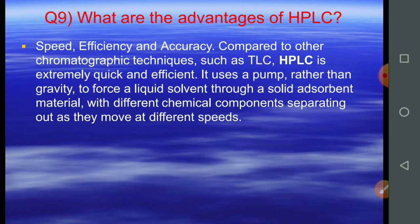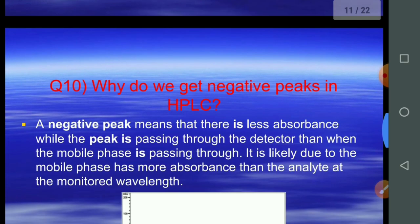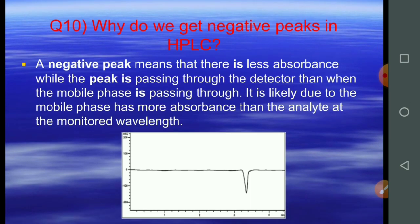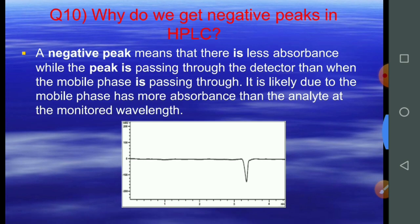Question number ten: why do we get a negative peak in HPLC? A negative peak means that there is less absorbance while the peak is passing through the detector than when the mobile phase is passing through it. This is likely due to the mobile phase having more absorbance than the analyte at the monitored wavelength.